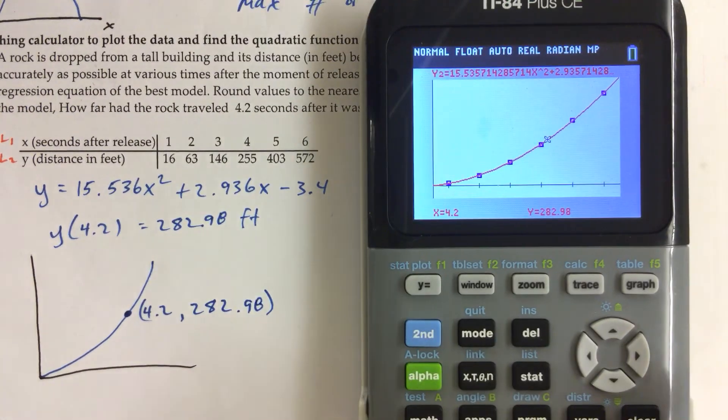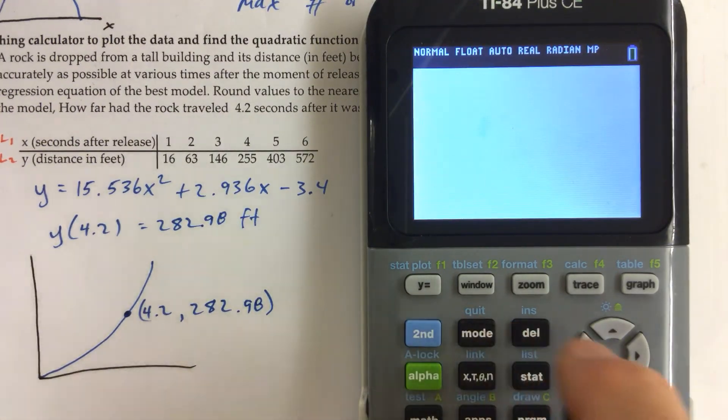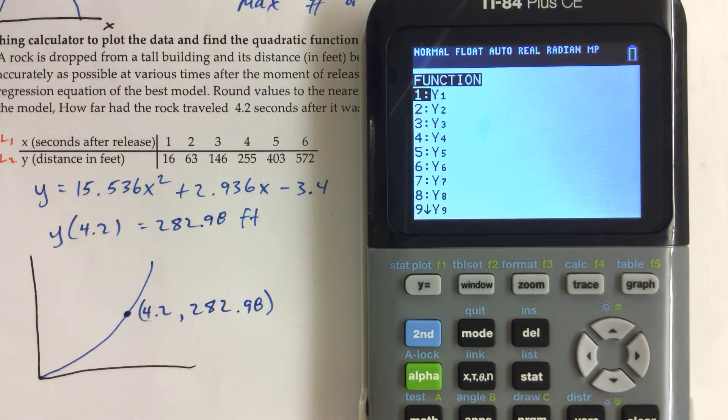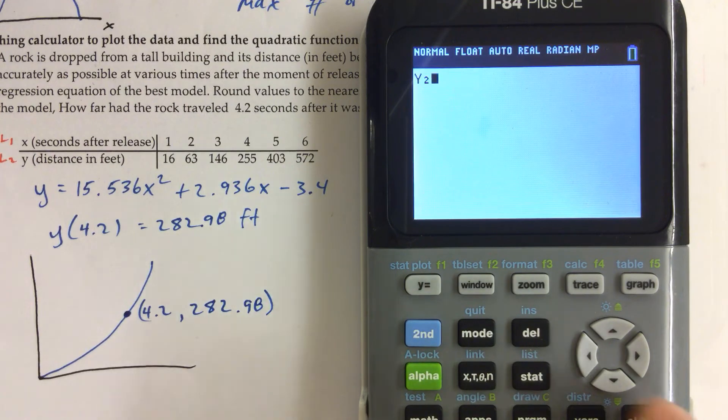And we can also find that value if we clear the screen, vars, Y variables, Y2. Remember, it's in Y2. I deleted my Y1. At 4.2. So this is one way to do it.